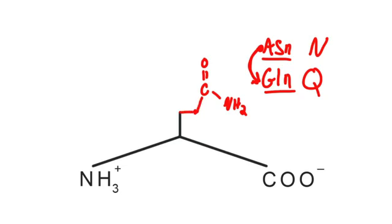Glutamine has one more carbon than asparagine. They're both essentially a carboxamide group attached almost directly, or through one extra carbon, to the beta carbon of the amino acid.